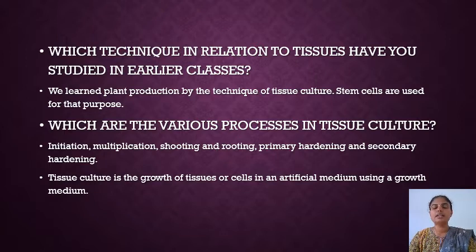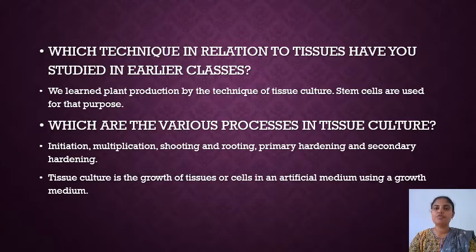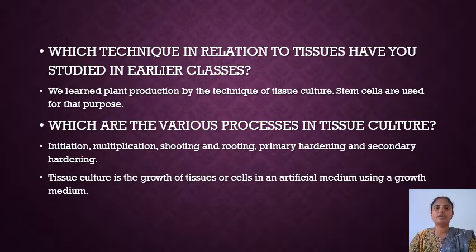A growth medium is used to enhance the full growth of the plant. Certain chemicals are used for developing the root and shoot separately. Then the grown plant is transferred to soil and grown under lab conditions, before successfully grown plants are shifted to the soil for further growth. These things we have learned in 9th standard.